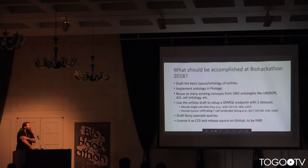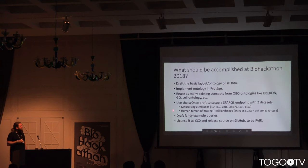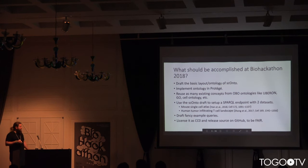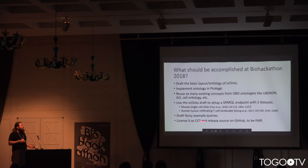What should be accomplished during the biohackathon? First, draft the basic layout and ontology, then implement it in Stanford Protégé, and reuse as many existing concepts from the OBO universe as possible — like Uberon, Gene Ontology, and cell ontology. Then we'd like to use this draft ontology to set up a SPARQL endpoint and import two datasets: the mouse single-cell atlas published this year, and a paper about the human tumor-infiltrating T-cell landscape from last year, a very high-interest dataset. Then we hope to draft some example SPARQL queries and put everything on GitHub under CC0 to meet FAIR data principles.